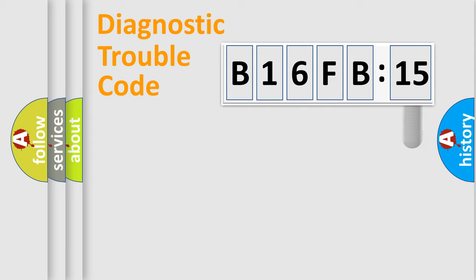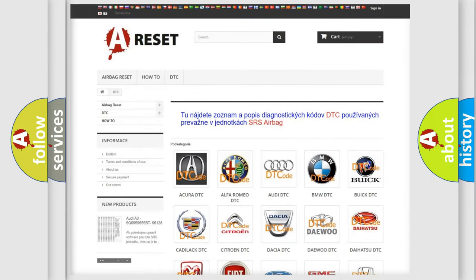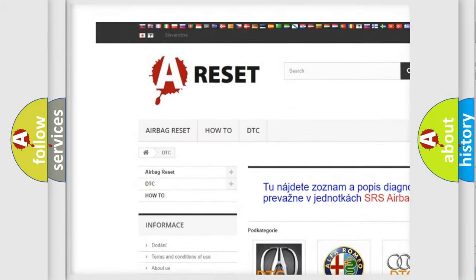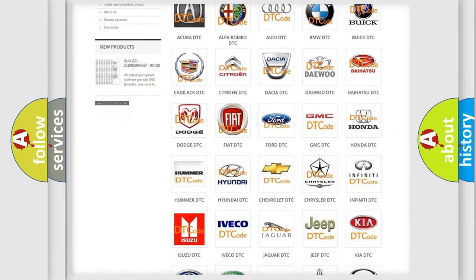Our website airbagreset.sk produces useful videos for you. You do not have to go through the OBD2 protocol anymore to know how to troubleshoot any car breakdown. You will find all the diagnostic codes that can be diagnosed in Chrysler vehicles, and also many other useful things.